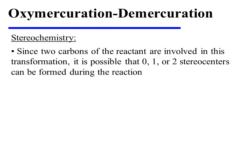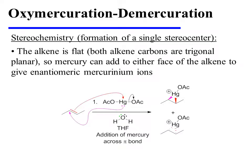Since two carbons of the reactant are involved in this transformation, it is possible that zero, one, or even two stereocenters can be formed during the reaction. Let's first consider a specific example in which a single stereocenter is formed.